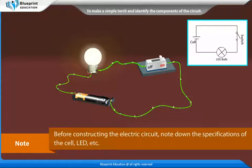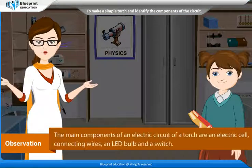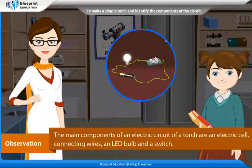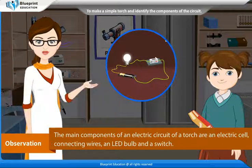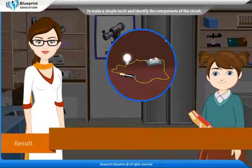Note: Before constructing the electric circuit, note down the specifications of the cell, LED, etc. Observation: The main components of an electric circuit of a torch are an electric cell, connecting wires, an LED bulb, and a switch.